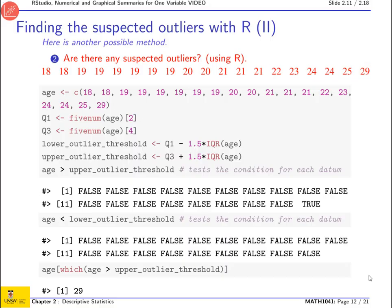Now you could do the same thing using the lower outlier threshold. And so for each value on the list, you check whether they are less than the lower outlier threshold. And in that case you can see that the condition is never satisfied. So none of these values is a suspected lower outlier.